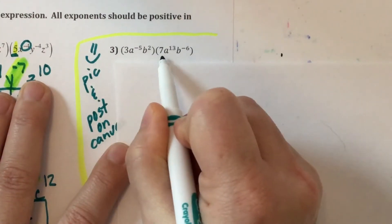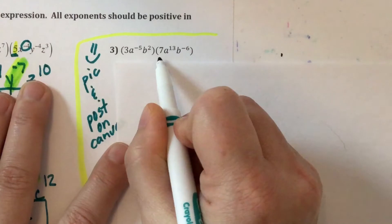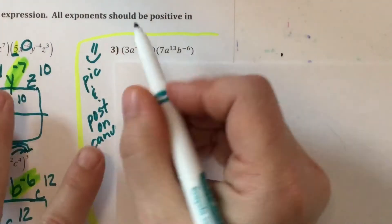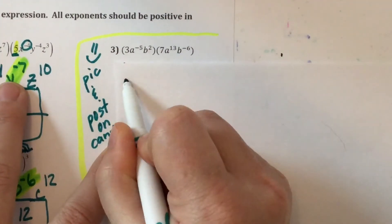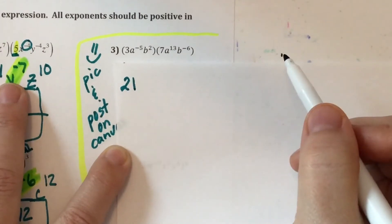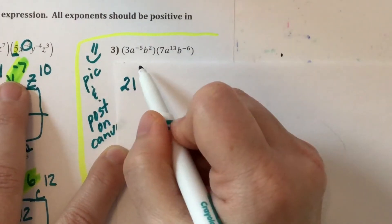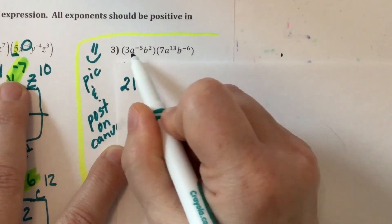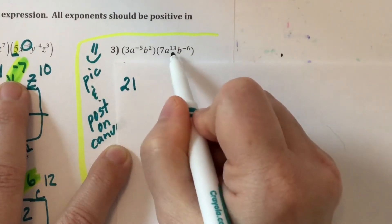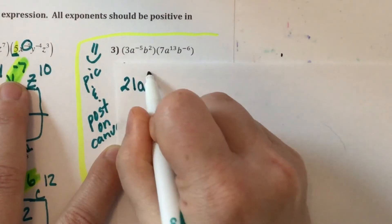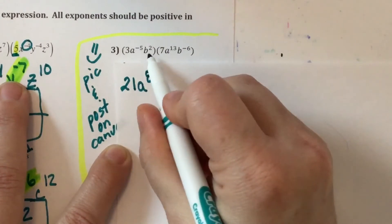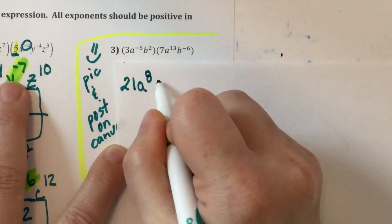So the 3 and the 7 I multiply because they're regular numbers and the parentheses are smushed. So 3 times 7 is 21. The exponents I add because it's the first rule. When you multiply, same bases, add exponents. So negative 5 plus 13 is 8 and 2 plus negative 6 is negative 4.